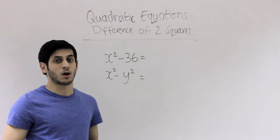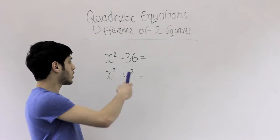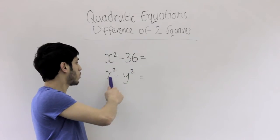For difference of two squares, three conditions need to be met. There must be two terms. So we've got one here, two here, one here, two here.